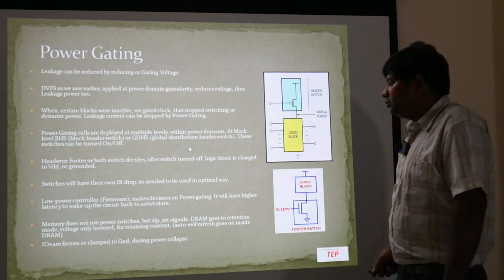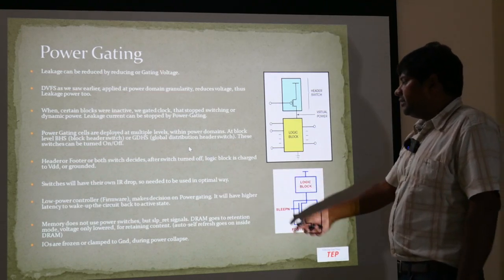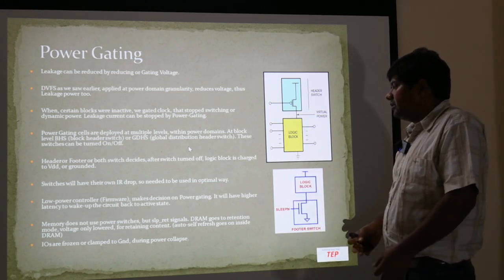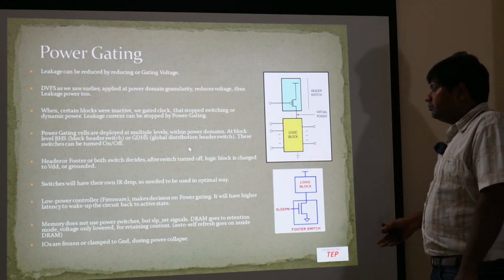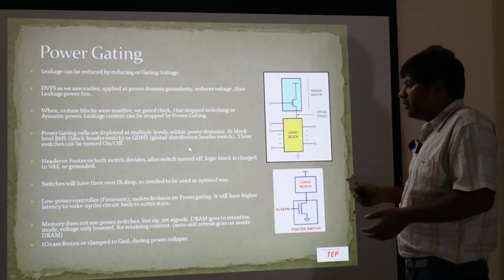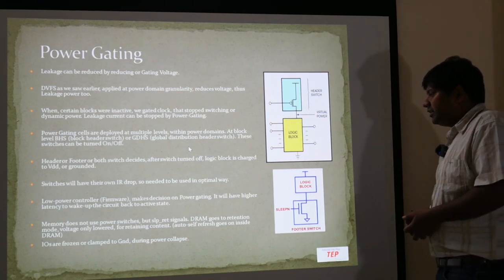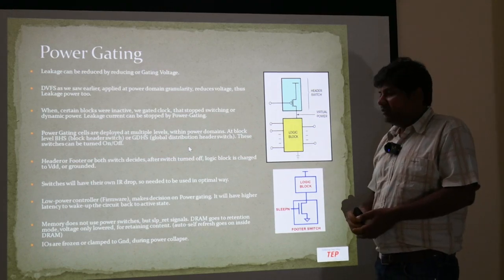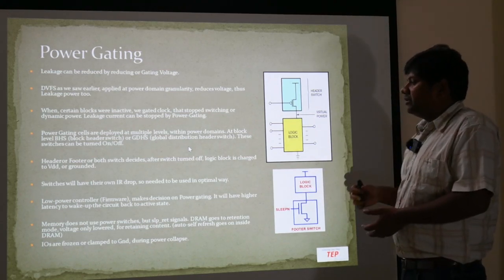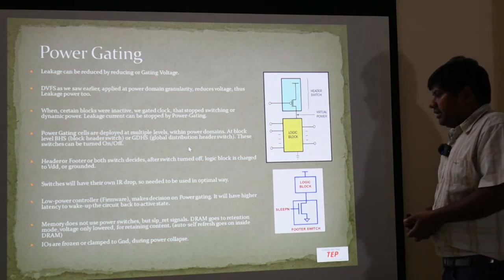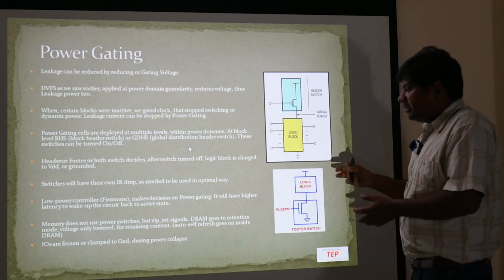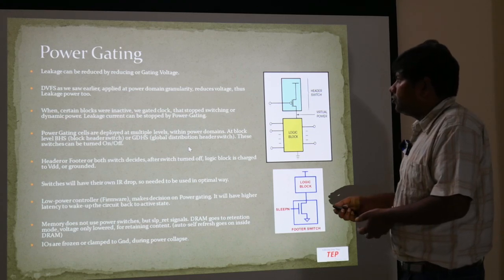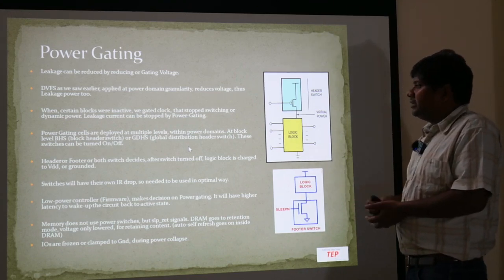This applies for logic blocks. Memory does not use power switches — it has sleep and retention signals where the voltage is only lowered to retain content, but memories are not power gated. They can go into self-refresh, which we will see in later chapters. Similarly, IOs can be frozen or clamped to a certain state during power collapse.